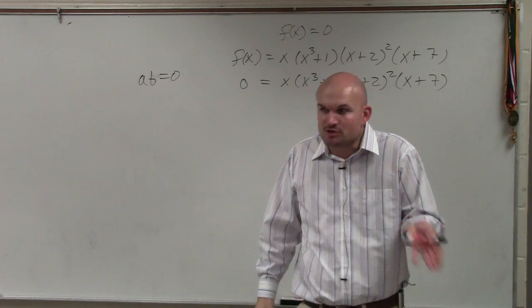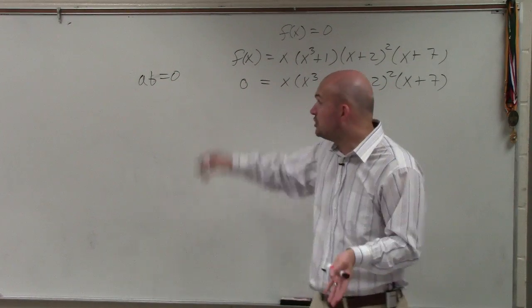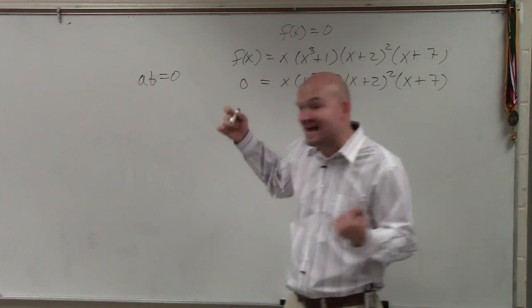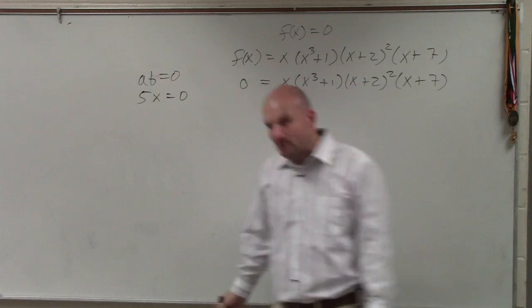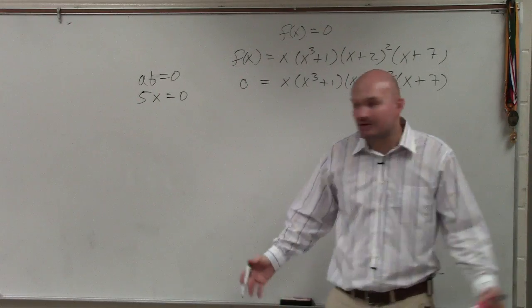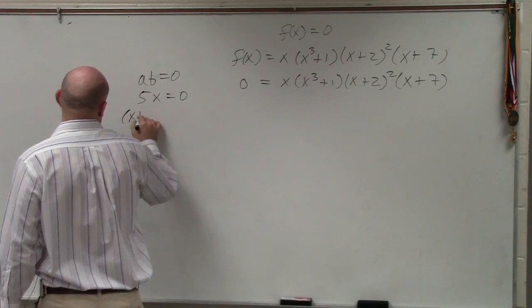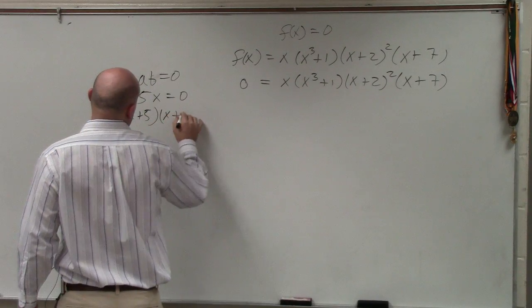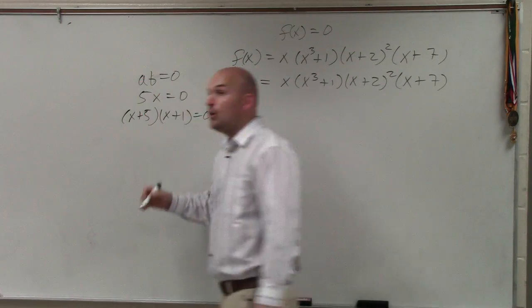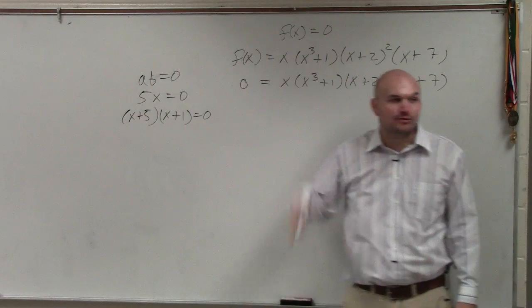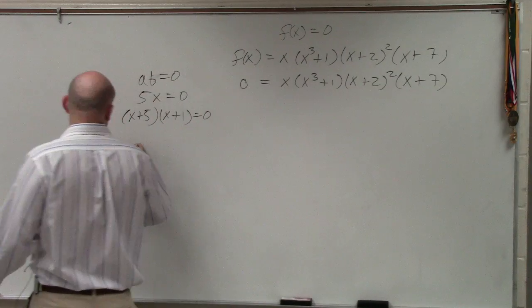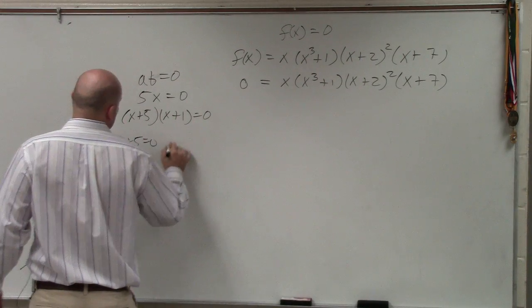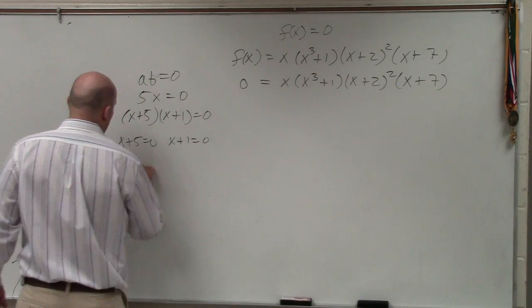if you have two terms or two numbers multiplied by each other equals 0, then one of them has to equal 0. So for instance, if I said 5 times x equals 0, what does x have to equal? Zero, right? Same thing. If I say (x+5) times (x+1) equals 0, one of them has to equal 0. So to find the values that is going to make either them equal to 0, you set them both equal to 0 and solve.